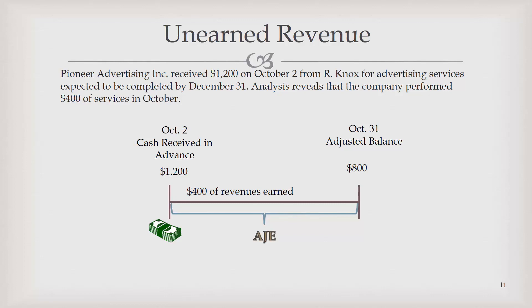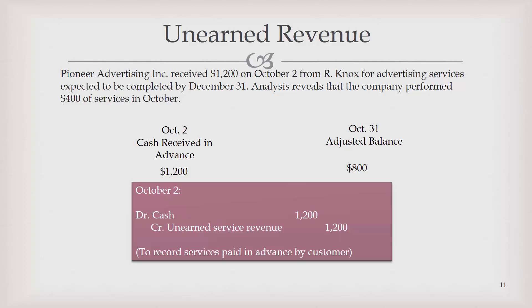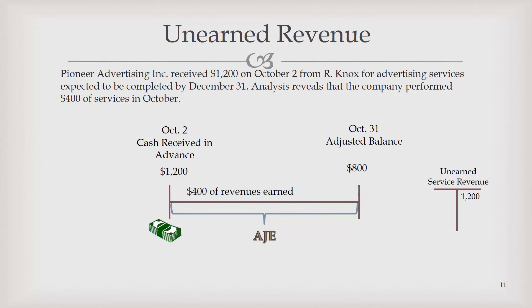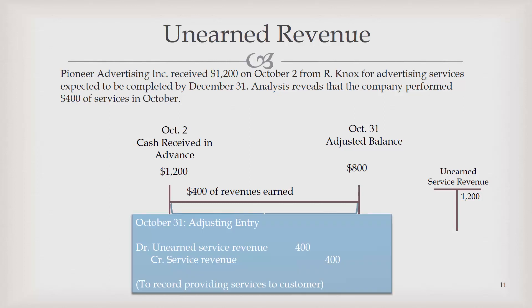Pioneer Advertising received $1,200 on October 2nd from a client for advertising services to be completed by December — three months worth of advertising. On October 2nd, they would have debited cash and credited unearned service revenue. Then during October they provided advertising services, so we need to show that they provided $400 worth of services and can now record $400 of revenue. Our adjusting entry would be a debit to unearned service revenue and a credit to service revenue, recognizing the $400 earned. After adjustment, the unearned revenue account still has $800 worth of services owed to customers. This unearned service revenue account is a liability — not a revenue account — because we owe them services.